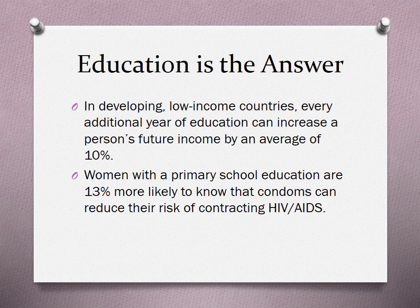So how do we fix this? Education. In developing low-income countries, every additional year of education can increase a person's future income by an average of 10%. Women with a primary school — elementary school — education are 13% more likely to know that condoms can reduce their risk of contracting HIV and AIDS. That's a huge improvement.